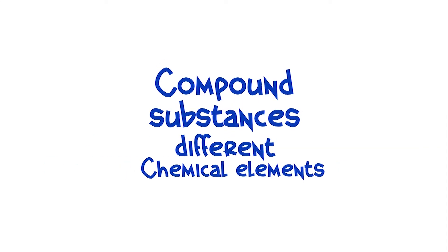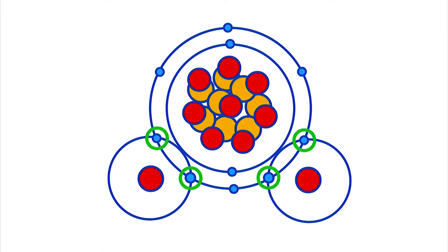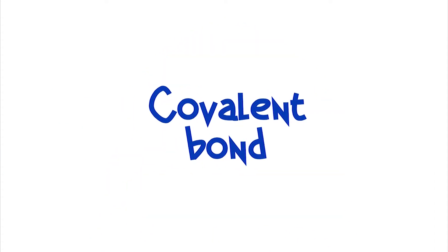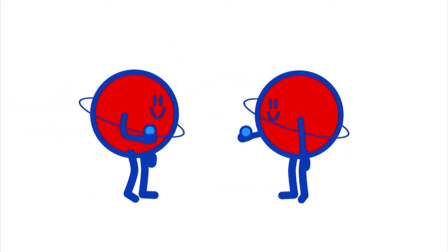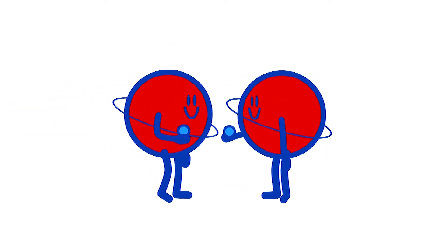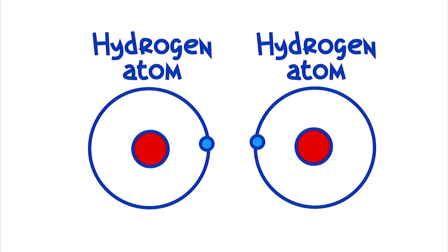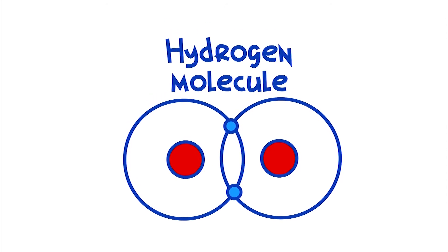Forming a substance, atoms join together by a process called covalent bonding. Atoms love electrons, so to make a bond they share at least one electron each, so they can join and form a substance.